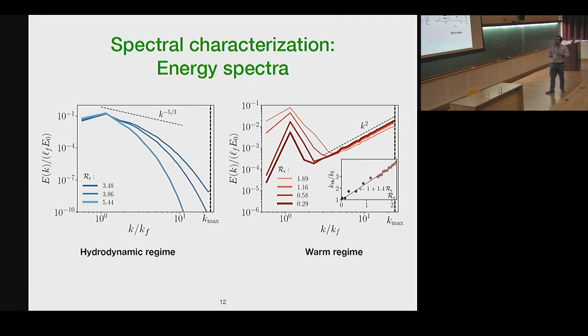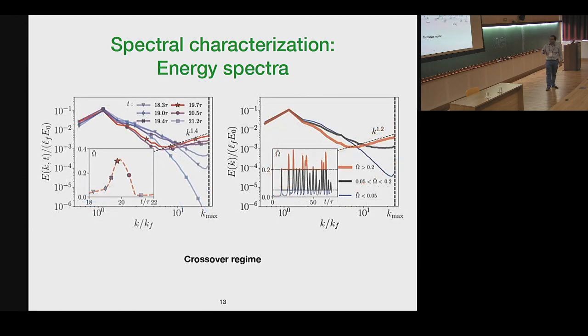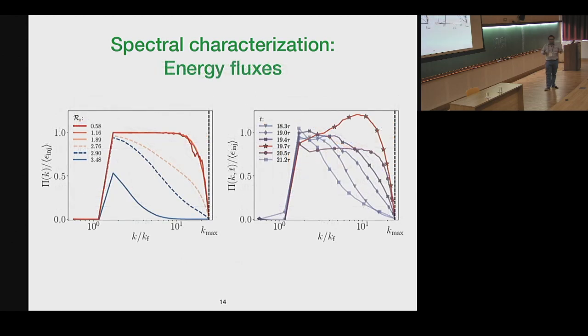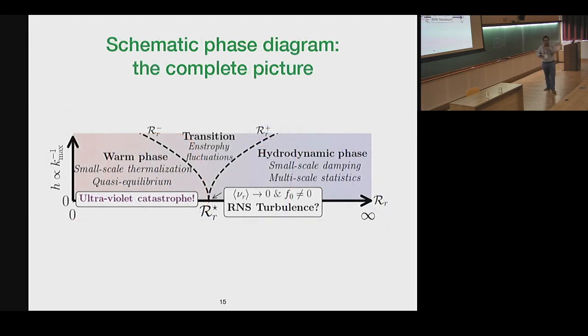We can also do a spectral characterization. In the hydrodynamic regime at very large r, the energy is concentrated around the forcing length scale, and at the other end, you have something which is distributed across length scales, a feature which is quite reminiscent of turbulent behavior. And on the warm side, you have a mixture or a coexistence of the two regimes, hydrodynamical and the phase.